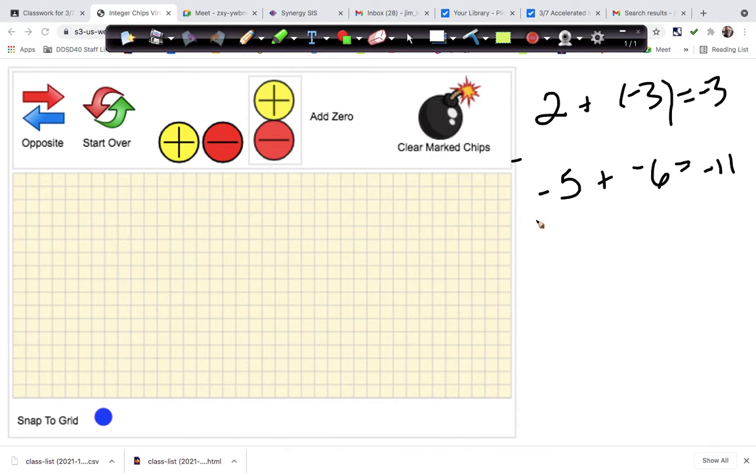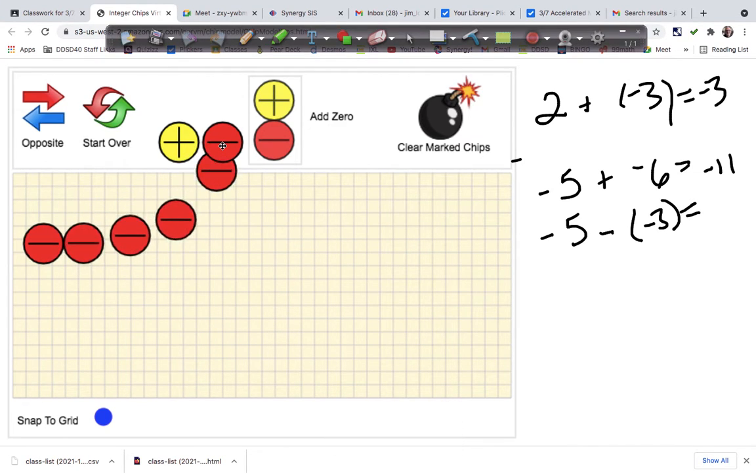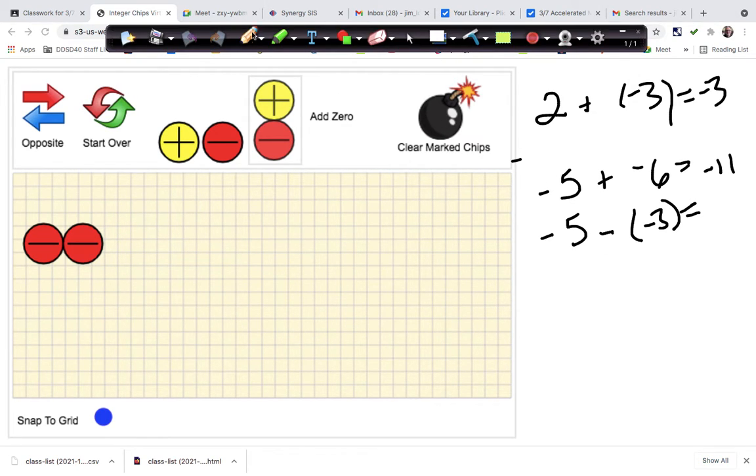Negative 11. And then we could do it with problems like subtraction, like negative 5 minus a negative 3. So I would do this, I'd put up five negatives and then this says take away three of the negatives. So I would just mark three of them and take them away. So I'd have two negatives left. So that's why we would have the answer of negative 2.